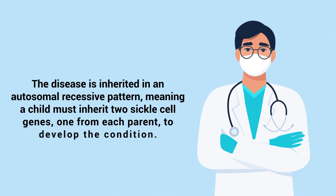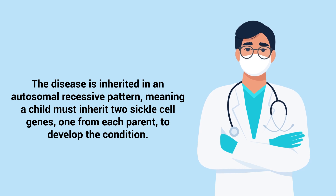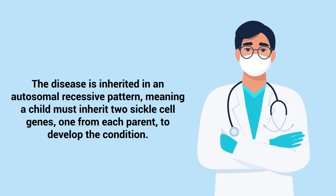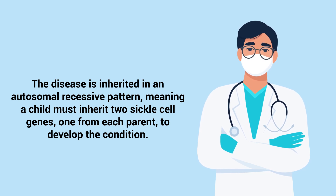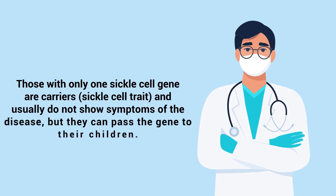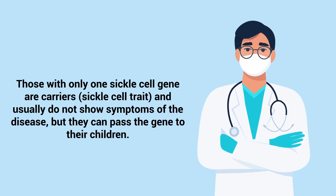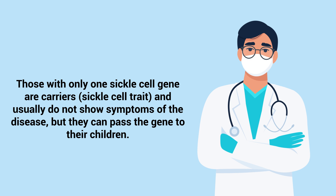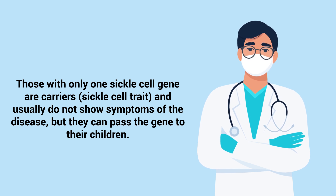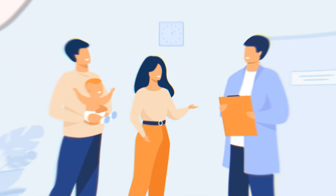The disease is inherited in an autosomal recessive pattern, meaning a child must inherit two sickle cell genes, one from each parent, to develop the condition. Those with only one sickle cell gene are carriers and usually do not show symptoms of the disease, but they can pass the gene to their children.